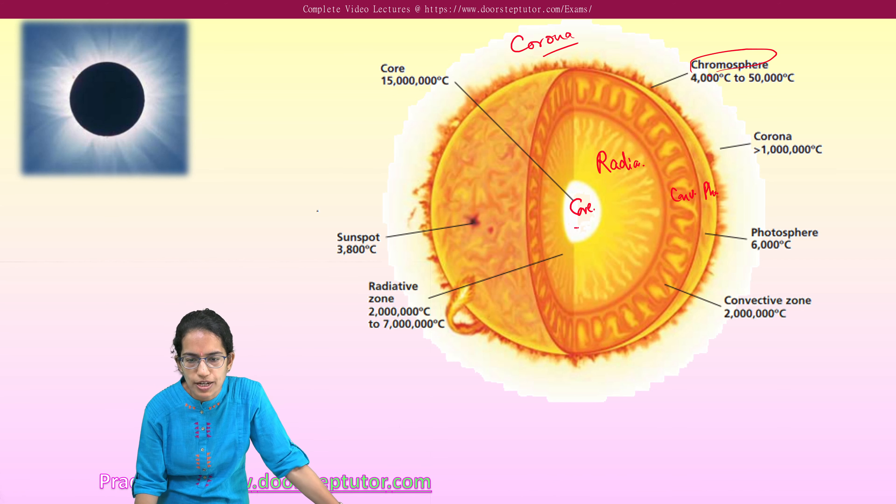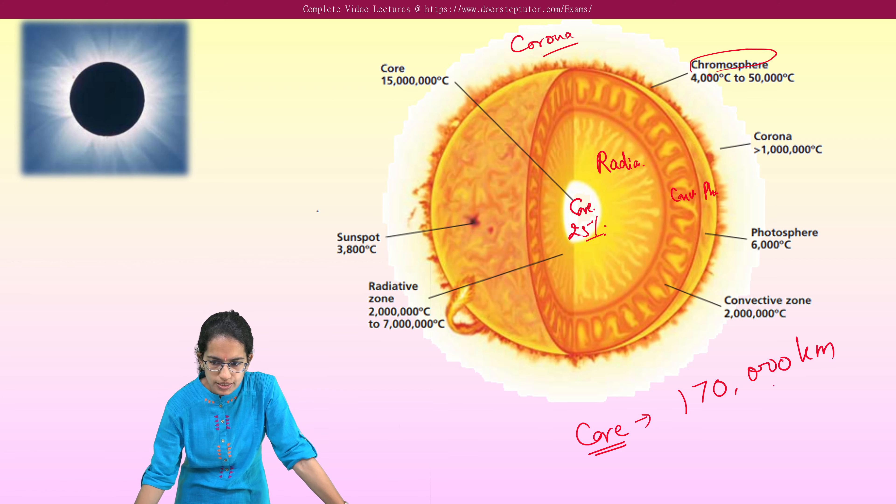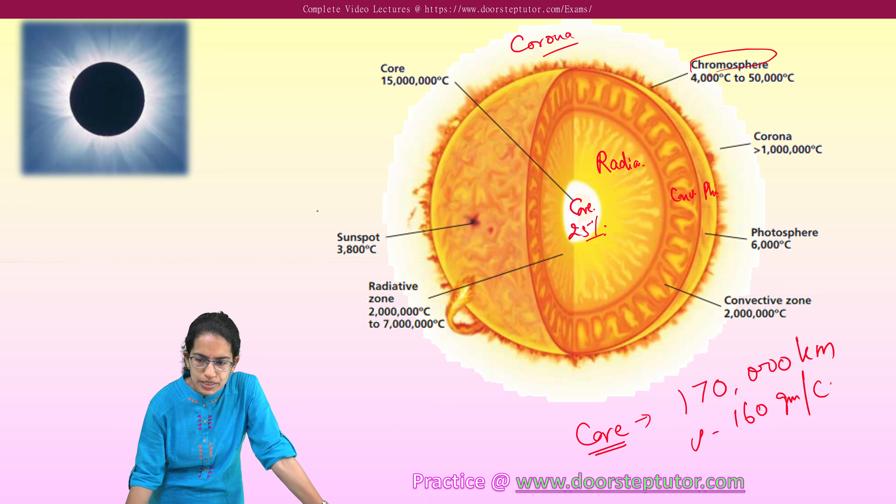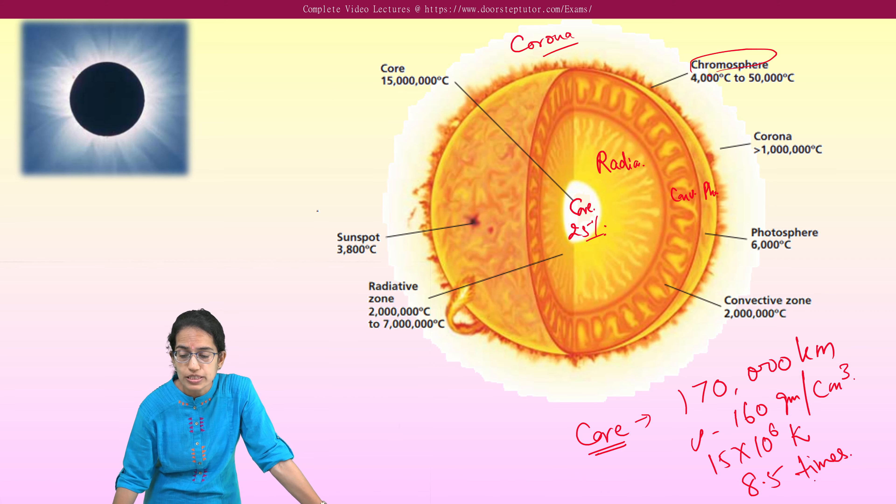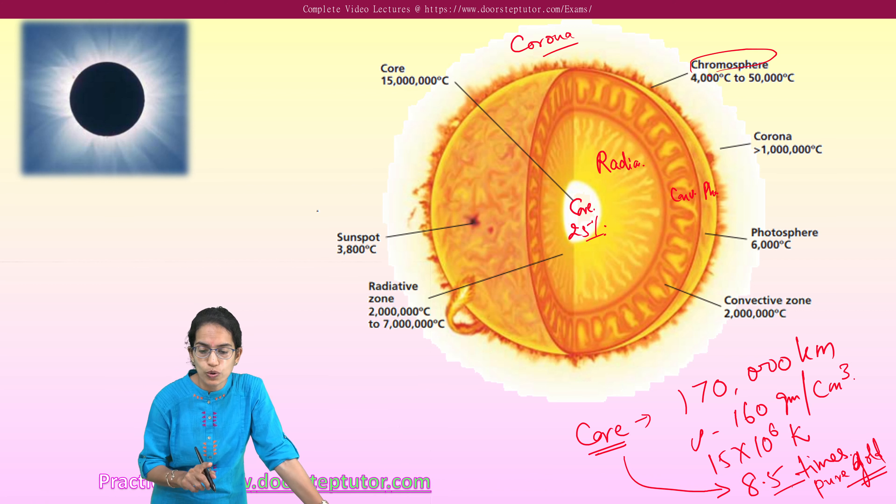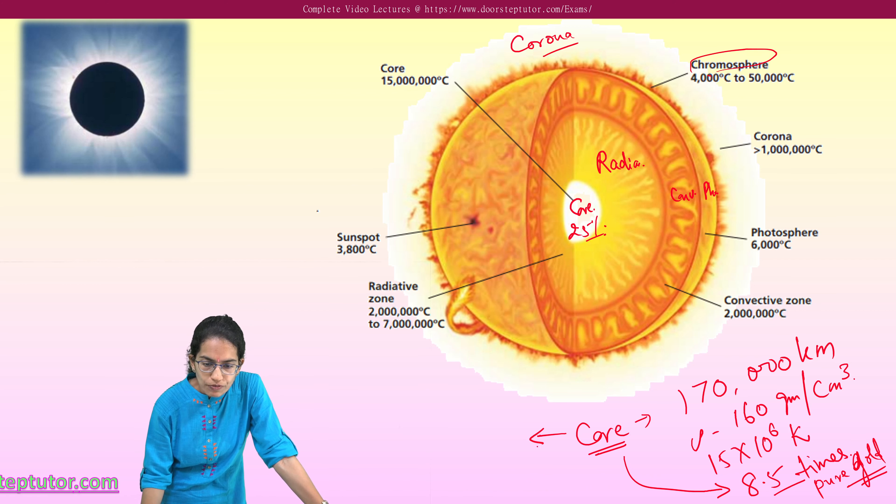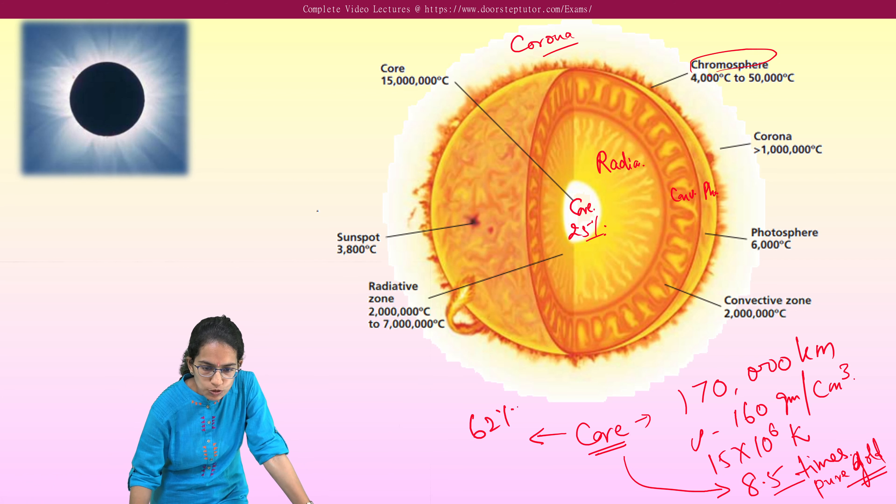Core has a diameter which is 25% of the total. Let me give you some basic information about core first. Core has a radius of 170,000 kilometers. It has a density of 160 gram per centimeter cube. The temperature is 15 into 10 raised to power 6 Kelvin. And this core is nearly 8.5 times as dense as the purest substance which is the pure gold. So this core is nearly 8.5 times more dense than pure gold itself. One very important thing is core has regular fusion reaction that takes place. At present we can say by mass 62% is helium and 38% is hydrogen for the core.